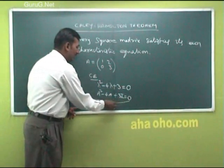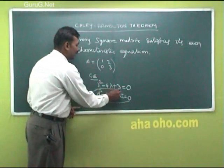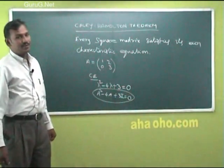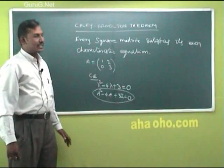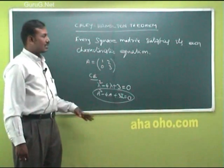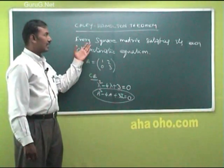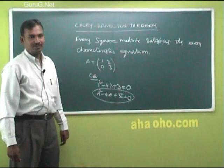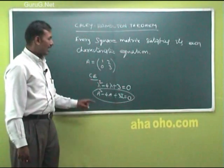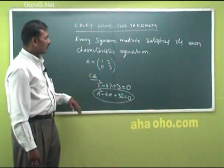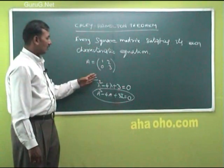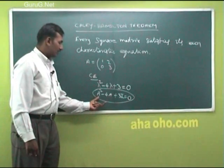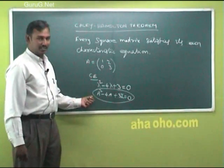Whenever a matrix satisfies its own characteristic equation, we say that matrix satisfies the Cayley-Hamilton Theorem. Now we have to prove this statement.